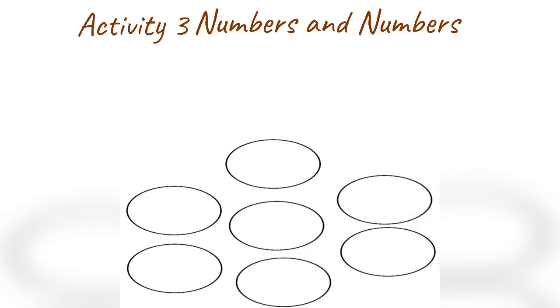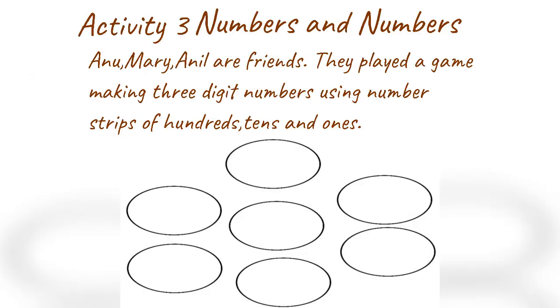Activity 3: Numbers and Numbers. Anu, Mary, and Anil are friends. They played a game making 3-digit numbers using number strips of hundreds, tens, and ones.